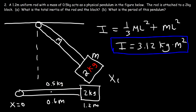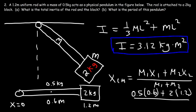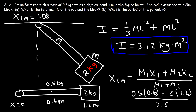To calculate it, we use the center of mass equation: (m₁x₁ + m₂x₂) divided by total mass. The first mass is the rod at 0.5 kg located at position 0.6, right at the center of the rod. The second mass is 2 kg located at position 1.2. The total mass is 0.5 plus 2, which is 2.5 kilograms. So: (0.5 × 0.6 + 2 × 1.2) divided by 2.5 gives us a center of mass position of 1.08 meters.